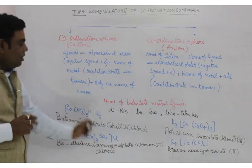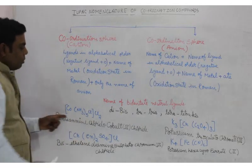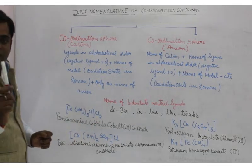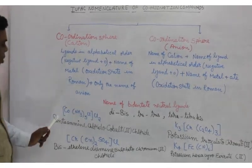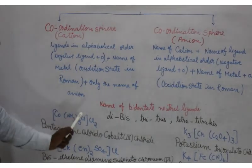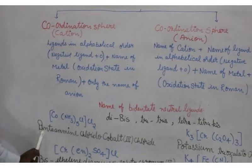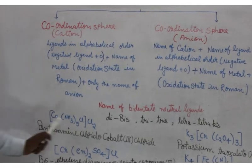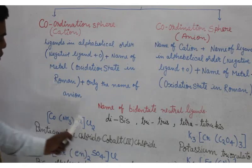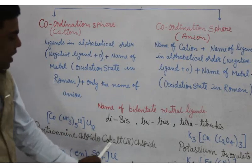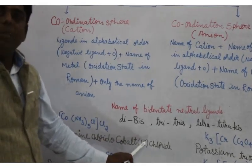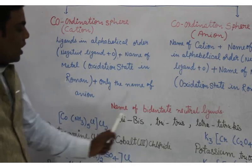For example, [Co(NH3)5Cl]Cl2 — this is our coordination sphere. There are two ligands: amine and chlorine. So we write pentaammine, then chlorido, then the metal name cobalt. The oxidation state here is +3, so we write cobalt(III).